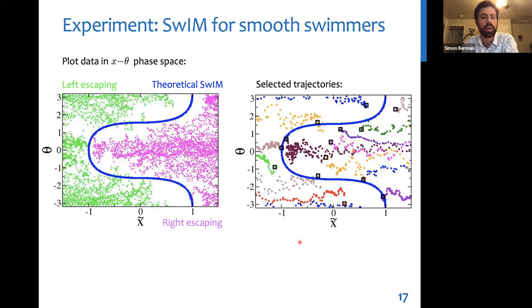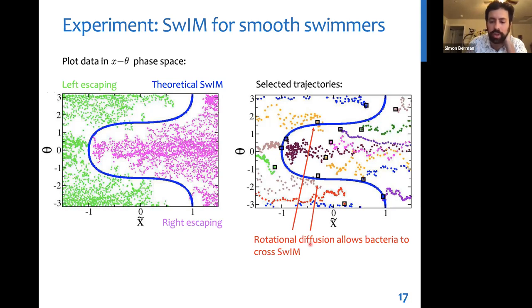Now if we plot the data in the x-theta phase space, so all these dots here are experimentally extracted trajectory points and they're colored according to whether the bacterium exits the region of interest to the left or the right. And our theoretical swim is plotted in blue. So we see overall that the theoretically predicted swim does tend to separate left escaping from right escaping swimmers as expected. There are some deviations, however, and here we plot some selected individual trajectories. We can see that there are some trajectories which cross the swim, and we believe this is due to the randomness, small amounts of randomness in their orientation as they swim or rotational diffusion.